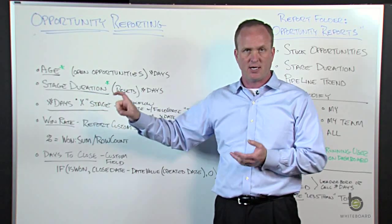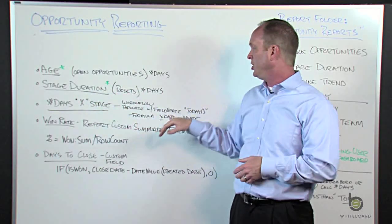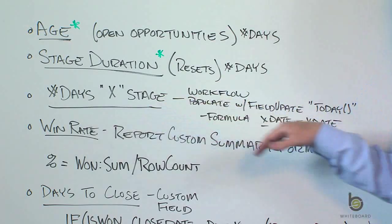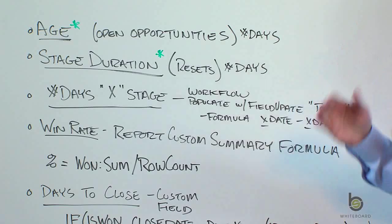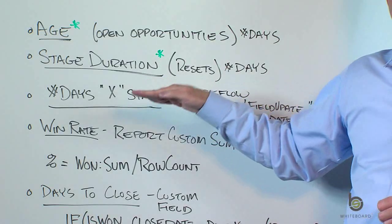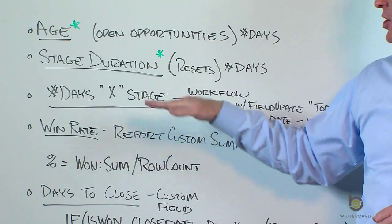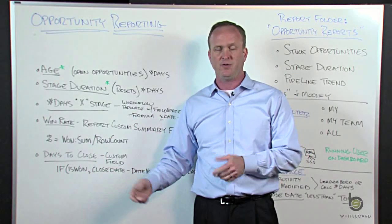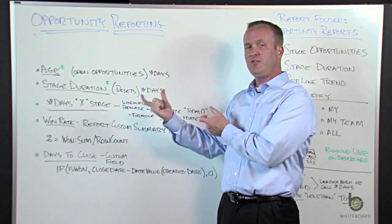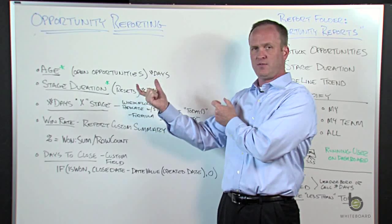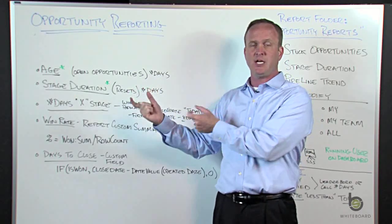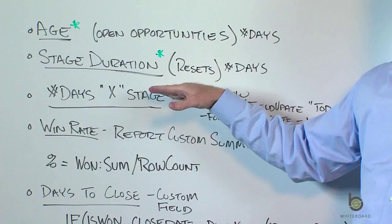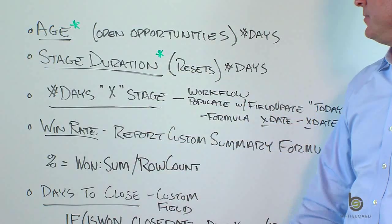As soon as a record hits that criteria of a new stage, you use a field update on your workflow action to populate today's date. You do that every time the stage changes, populating all those date fields. Then you use another custom formula field to do the math between dates — the date the opportunity entered one stage and the date it moved to the next — giving you the number of days at each stage level.